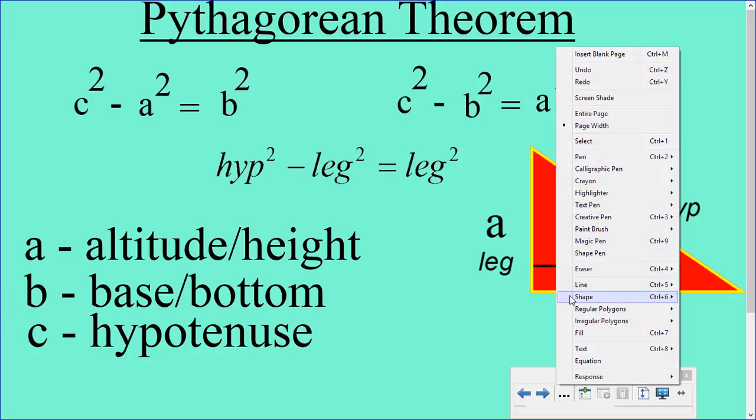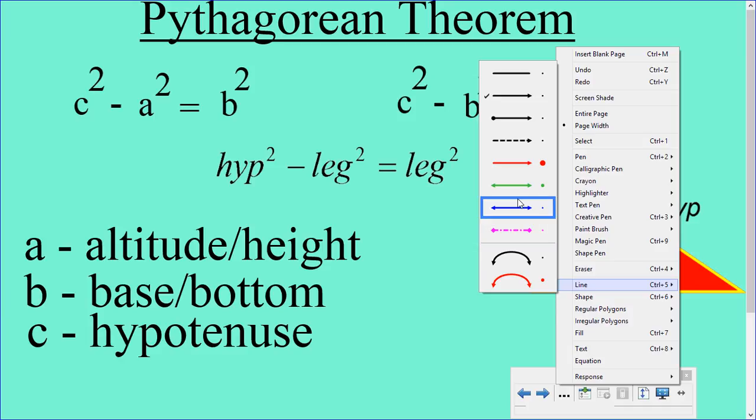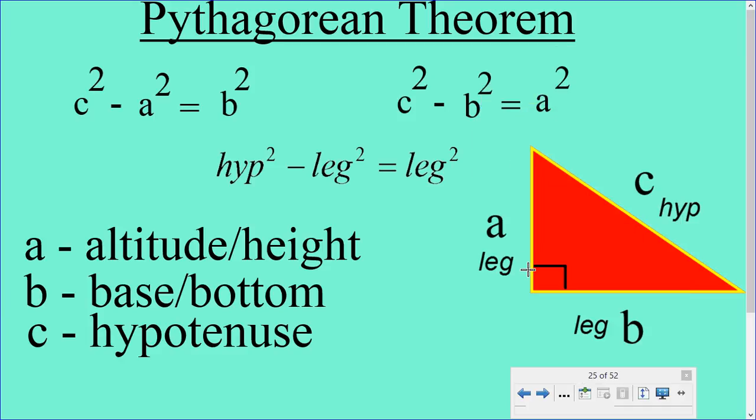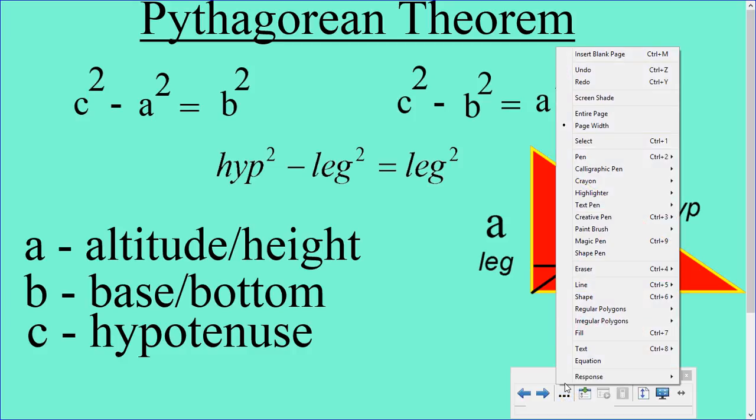We're going to take a look at the hypotenuse for a quick second just to identify it because that's going to be very important here. The hypotenuse is always found by being pointed at by the right angle. So, it's the longest side out of all three sides of the right triangle. So, you can always know that the right angle will always be pointing and it's opposite of the right angle. So, the hypotenuse is there. That's a good way in case they rotate your right triangle in a strange manner.